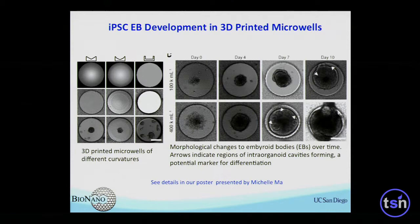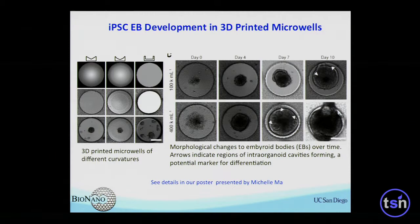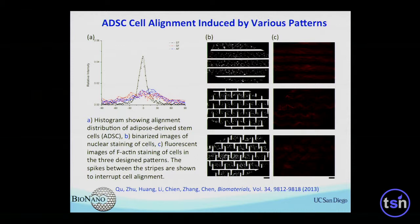We have morphological changes data over different days of these iPSC cells. In addition, we can create engineered structures like line arrays, put cells inside, and see how these cells align with defined microstructures. We can introduce disturbance in the system to see the disruption of alignment — symmetric disturbance versus unsymmetric disturbance. You can see those nuclear stains demonstrate that the pattern did regulate cell alignment.